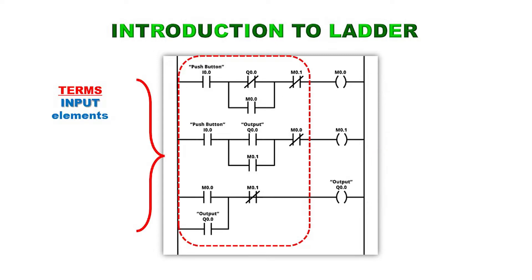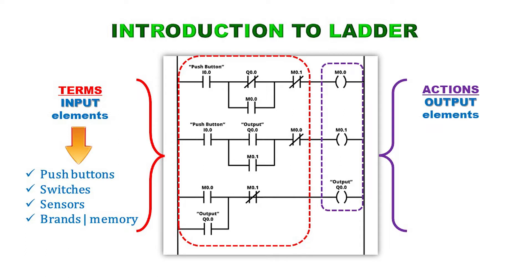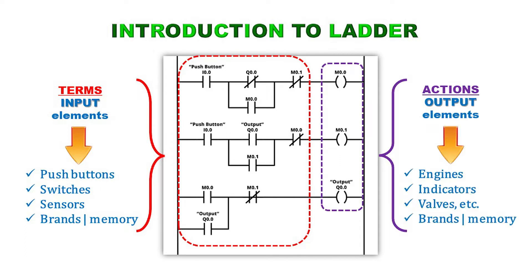The elements enclosed in red represent the conditions, which can be physical input elements such as buttons, switches, sensors, etc., or they also represent internal variables such as marks or memories. The elements enclosed in purple represent the actions, which can be physical output elements such as motors, gauges, valves, etc., or they also represent internal variables such as marks or memories.